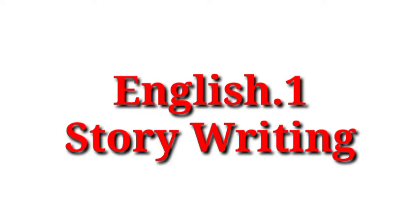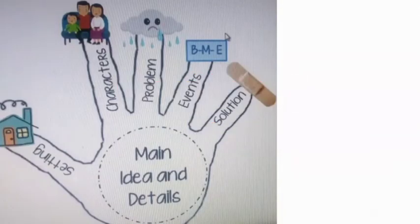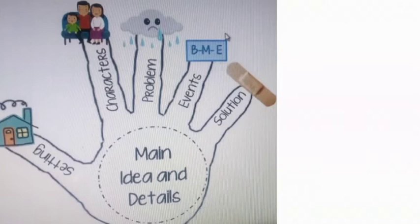So let's see what are the main elements of a story. There are basically five elements that make a good story. The first is setting, second is character, third is problem, fourth is event, and the last is solution.